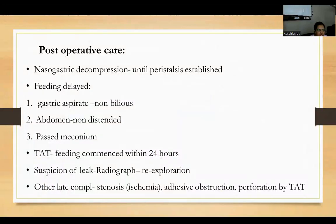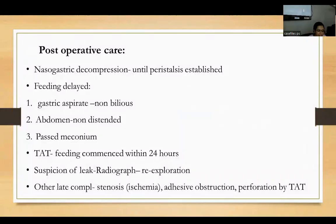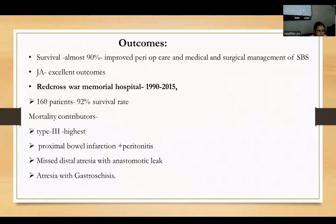Postoperatively, nasogastric decompression is continued until peristalsis is established. Feeding is delayed until gastric aspirate is non-bilious, abdomen is non-distended, and the patient has passed meconium. If a trans-anastomotic feeding tube is placed, feeding can commence within 24 hours. If leak is suspected, a radiograph showing air under the diaphragm warrants immediate re-exploration. Late complications include anastomotic stenosis due to ischemia, adhesive obstruction, and perforation due to the trans-anastomotic tube. Overall survival is approximately 90% due to improved perioperative care and better management of short bowel syndrome.